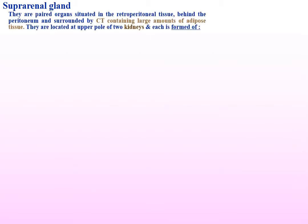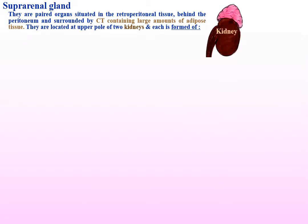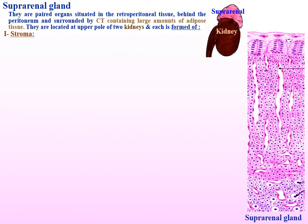Suprarenal glands. They are paired organs situated in the retroperitoneal tissue behind the peritoneum and surrounded by connective tissue containing large amounts of adipose tissue. They are located at the upper pole of the two kidneys. Each one is formed of stroma which is composed of capsules made of connective tissue, fibres and cells.